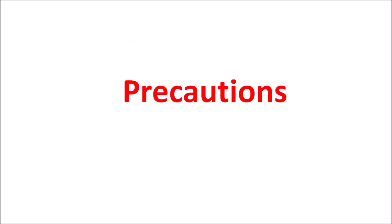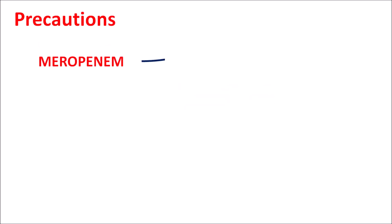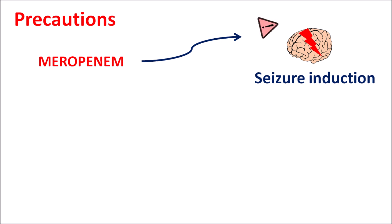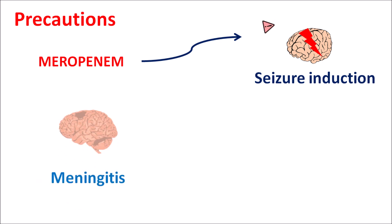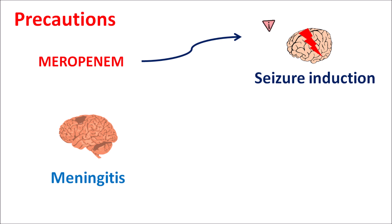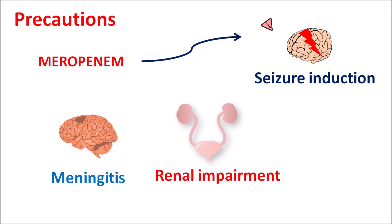One important precaution of meropenem is that it may increase seizure induction, so precautions should be taken when it is given for treating central bacterial infections such as bacterial meningitis. More uptake of meropenem into the CNS may increase seizure potential. In patients with renal impairment, meropenem levels can be excessively elevated, again increasing seizure risk — so the dose should be reduced in severely renal-impaired patients.